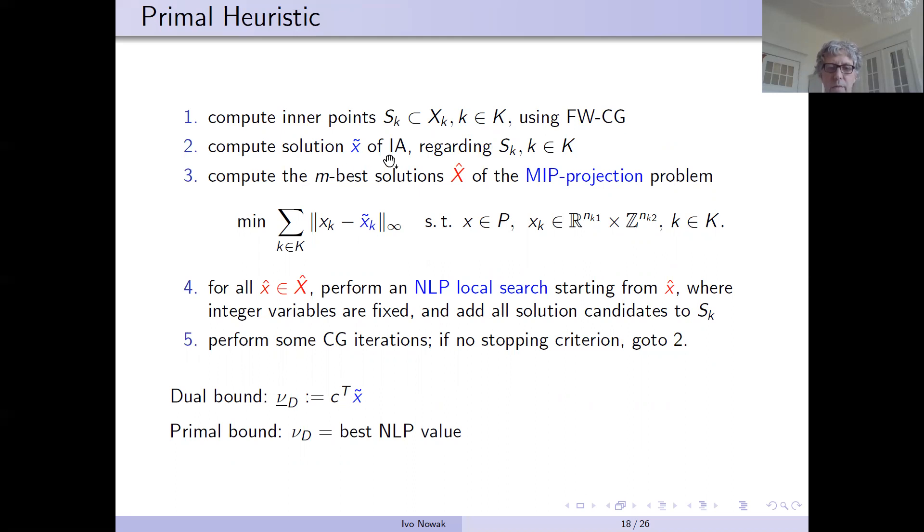So this gives us a lower bound from the first iterations where we solve the convex hull relaxation and an upper bound which is defined by the best feasible point.